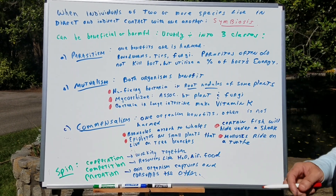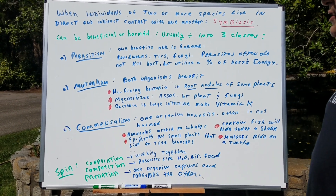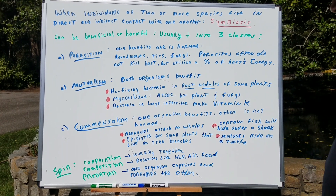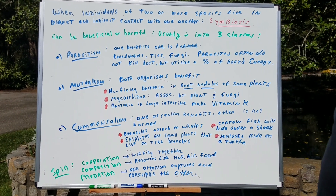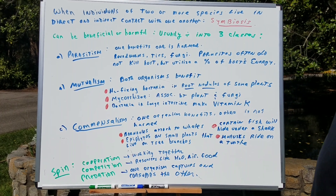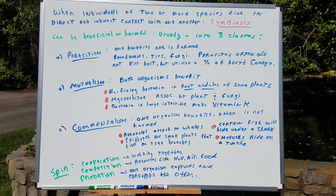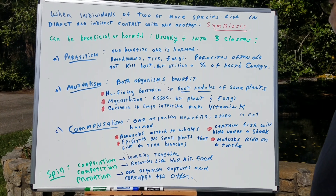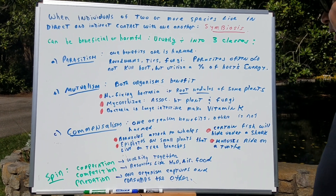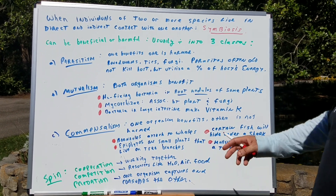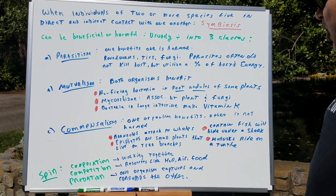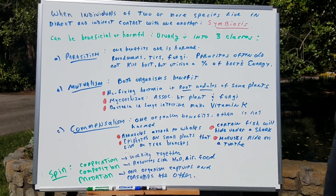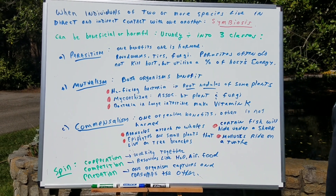Commensalism is always a question that I see on exams. This simply means one organism benefits and the other is not harmed. Barnacles attaching to whales, certain fish hiding under a shark, epiphytes — small plants that live on trees and tree branches — and mollusks that ride on turtles are all examples.